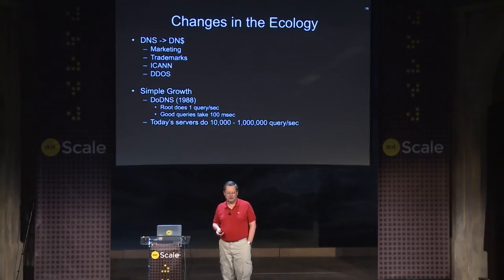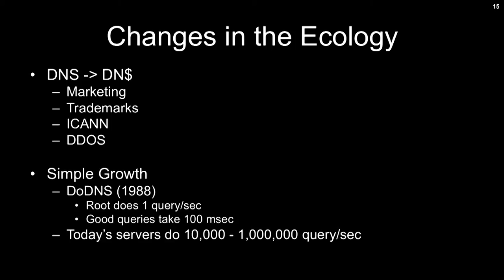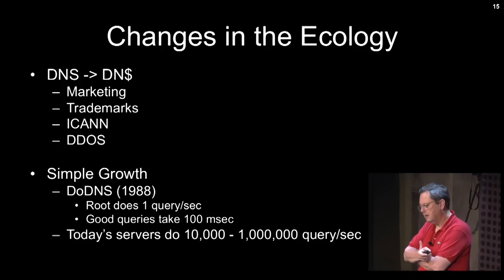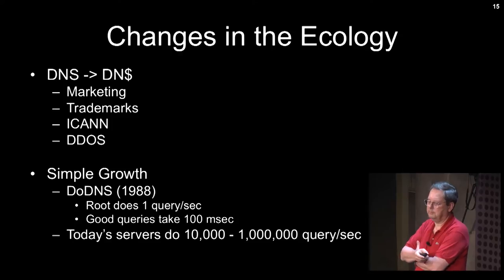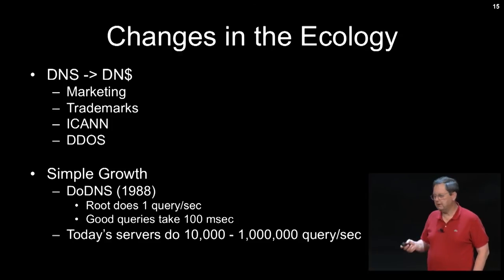Another thing that happened as DNS evolved is that the ecology evolved. I say DNS became DN-dollar-sign. The current round of new TLDs — people have paid a third of a billion dollars — so they expect marketing and trademark control at the top level. There's also DDoS: because DNS was designed with UDP and you can forge source addresses, DDoS attacks are bad news in the DNS world. Faster links make the problem worse — give somebody a faster link and they can mount a more effective DDoS attack. We need to think about how to evolve the protocol with the environment.